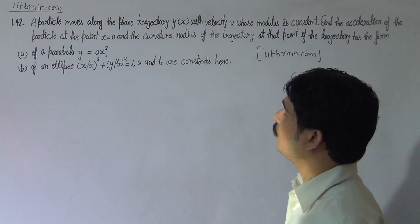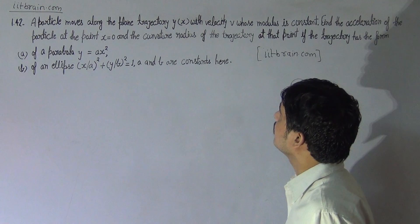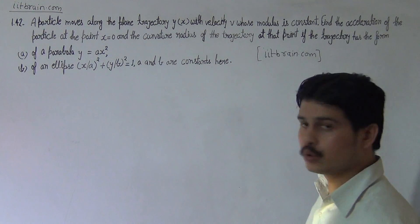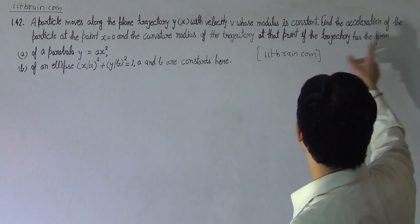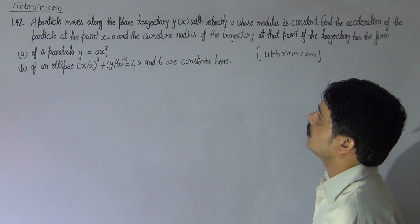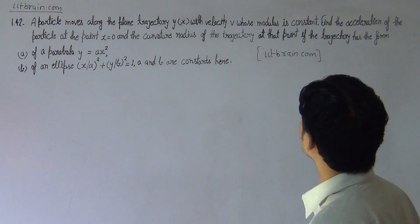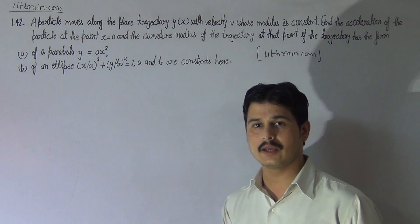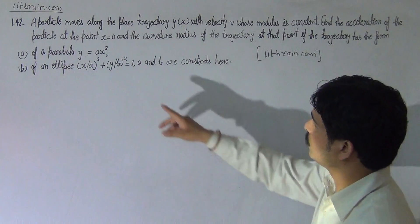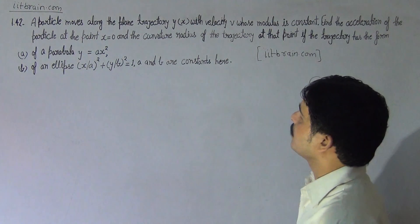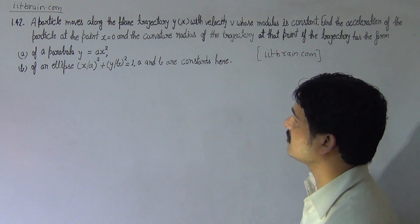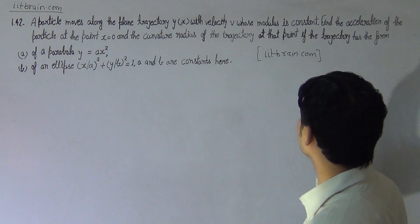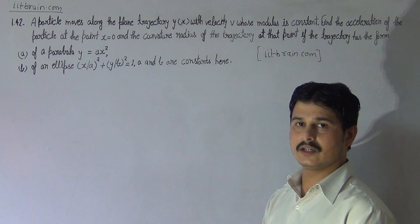Hello students. This is problem 1.42. A particle moves along the plane trajectory y depending on x with velocity v, whose modulus is constant. Find the acceleration of the particle at the point x equal to 0 and the curvature radius of the trajectory at that point, if the trajectory has the form of a parabola y equal to ax squared.